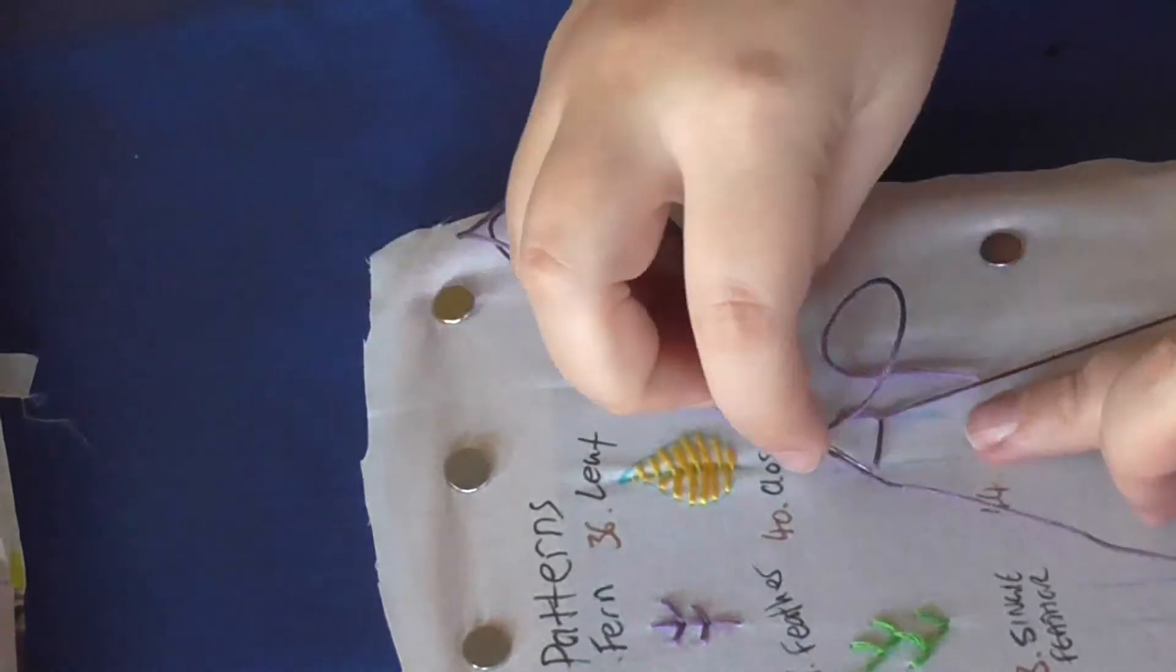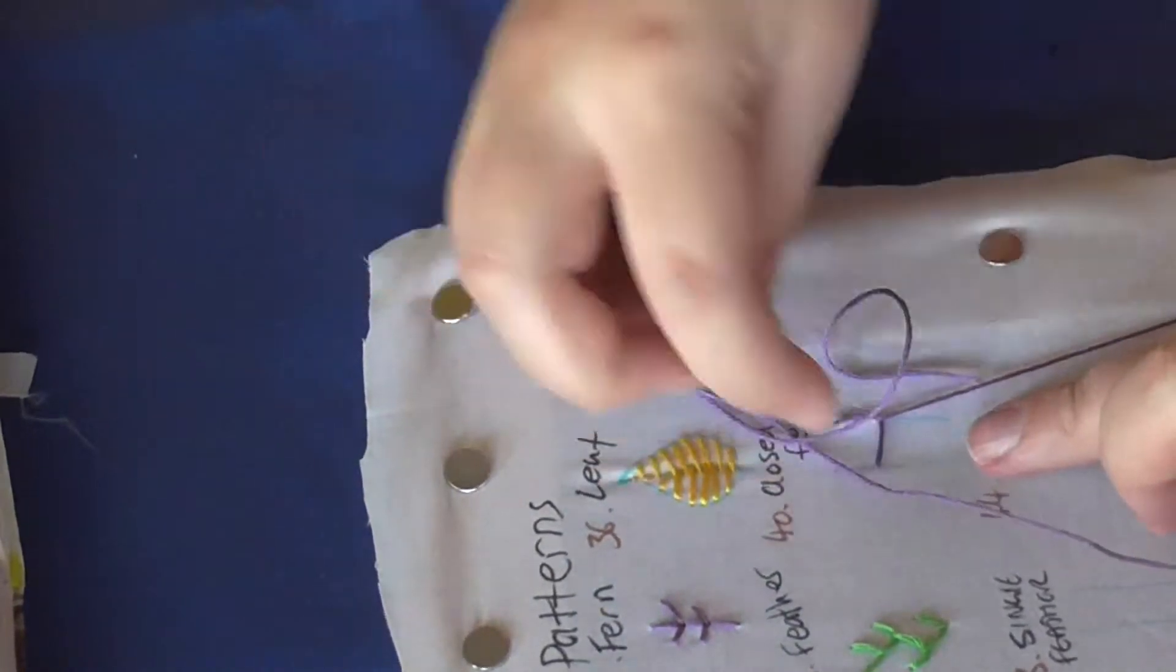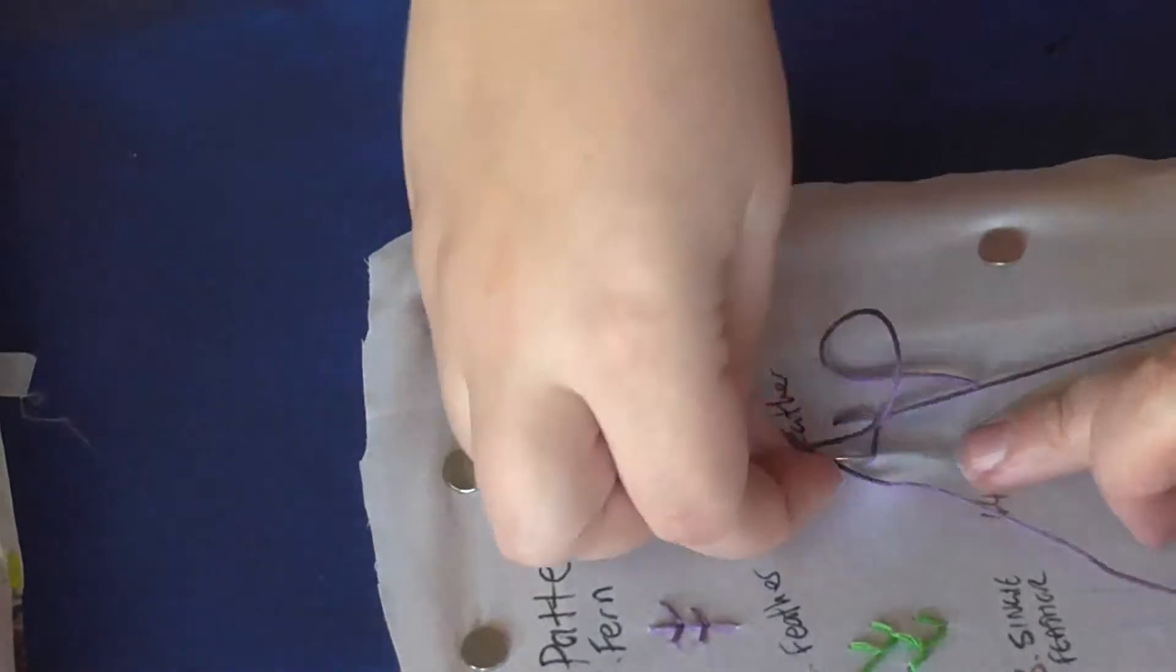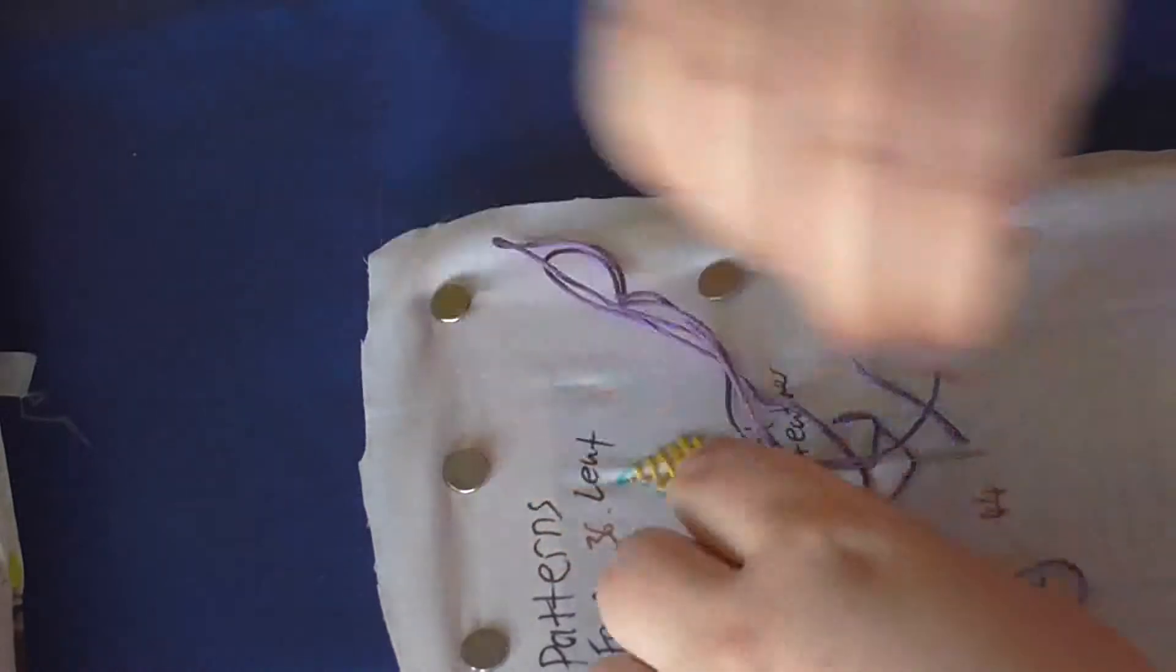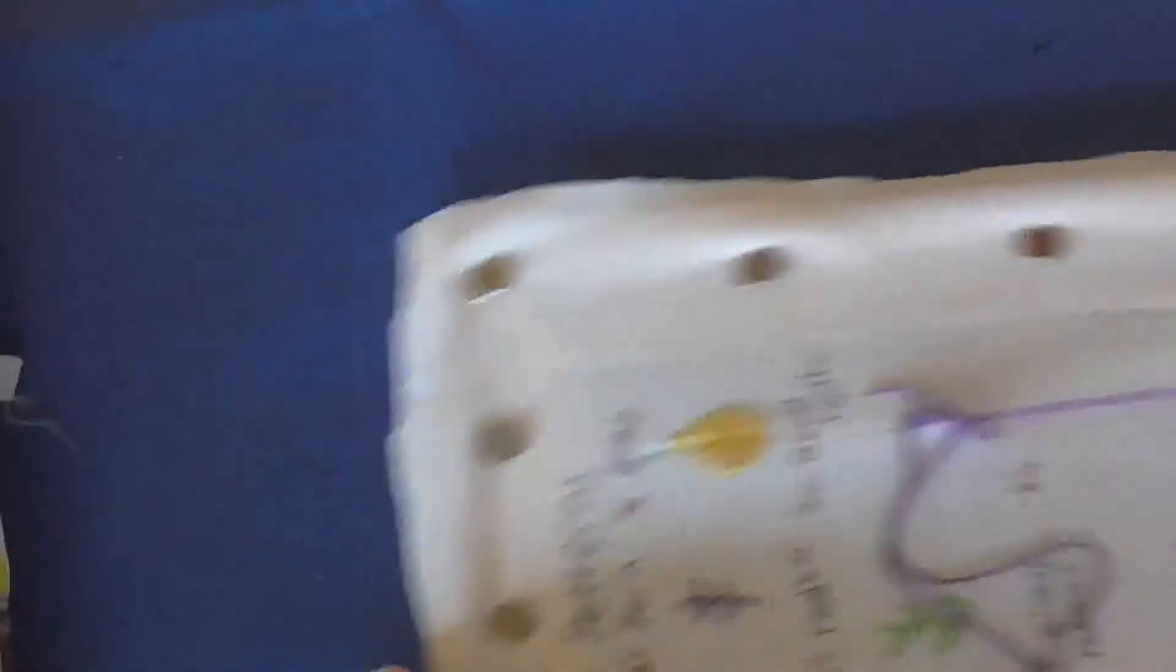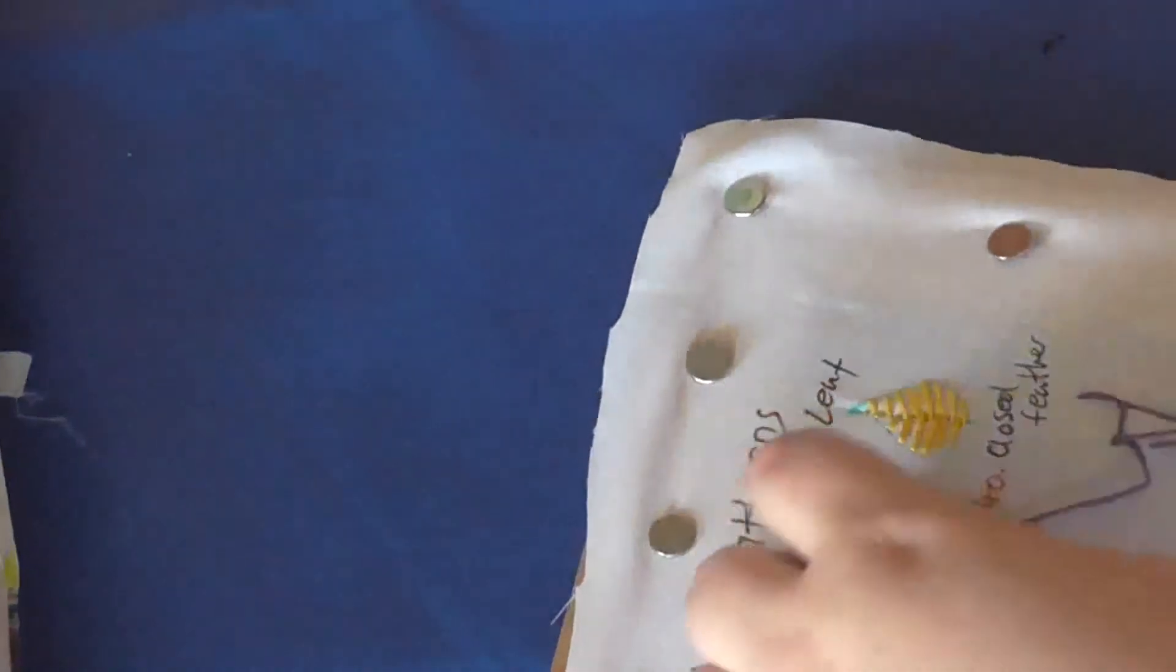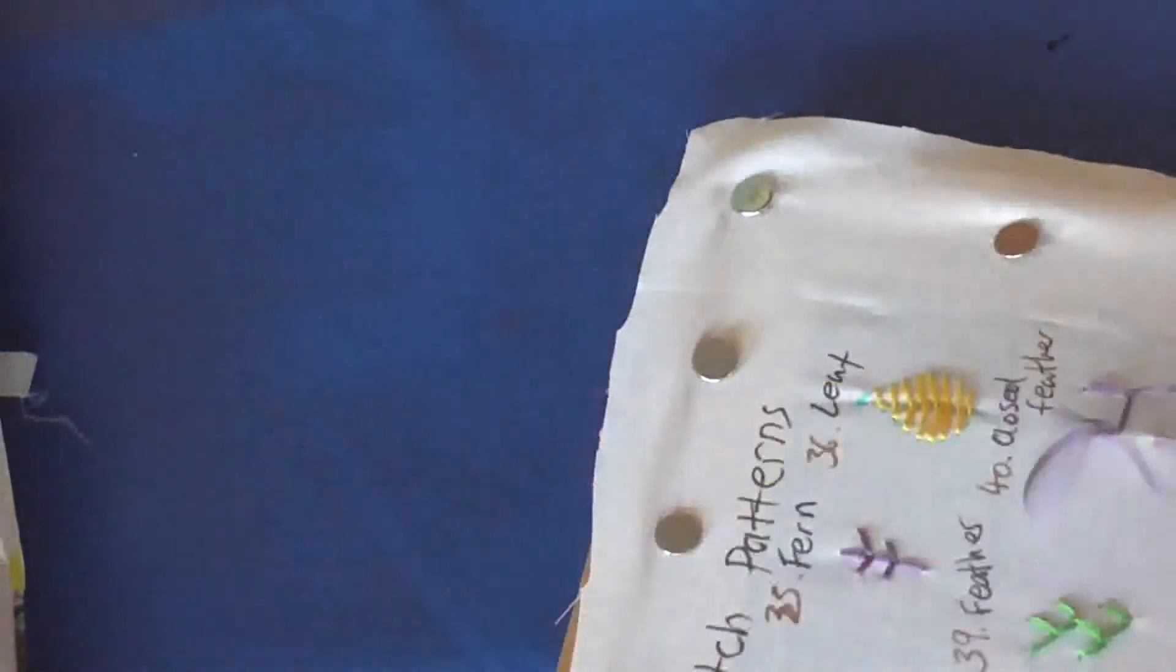And then you just repeat on the other side. So you keep it closed by using the same hole on the other side and just pull the thread under, not make a knot, like that.